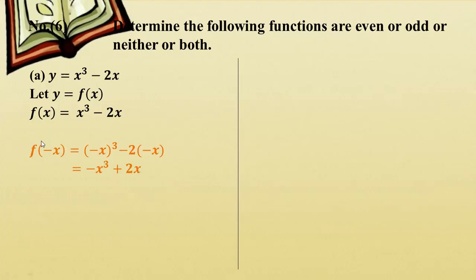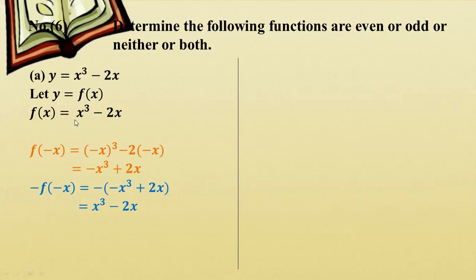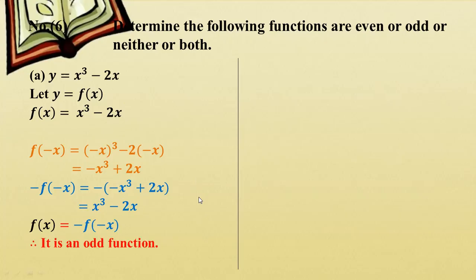We have minus f(-x). What we're going to do is substitute: f(-x) equals minus 2a. Comparing, we see that f(-x) equals minus f(x). So the function is an odd function.